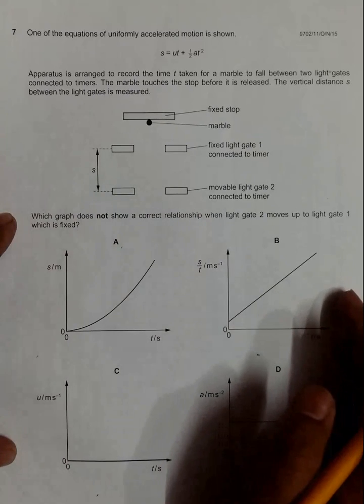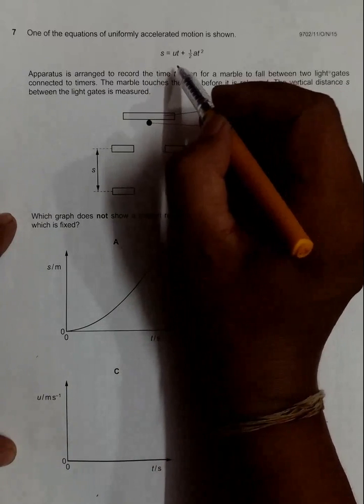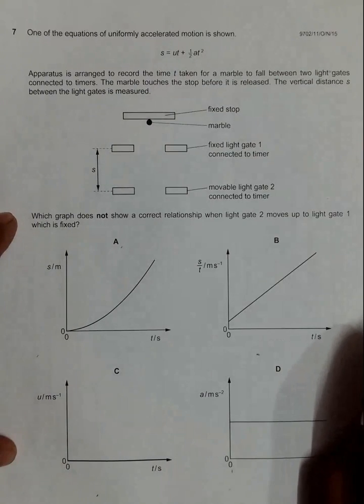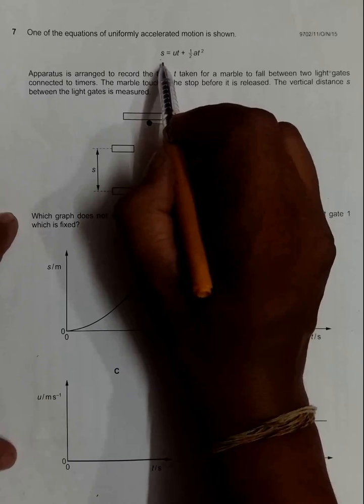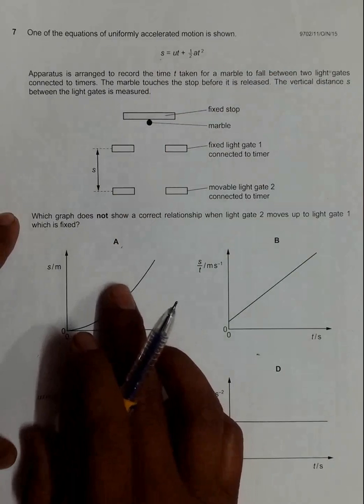When we change this s, T also changes, and according to this equation, what we must have is the whole thing should follow a parabolic path because this equation follows a parabolic curve. So it seems that choice number A is correct, it is a correct relationship.